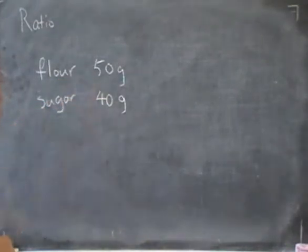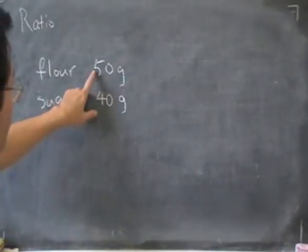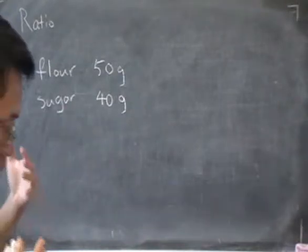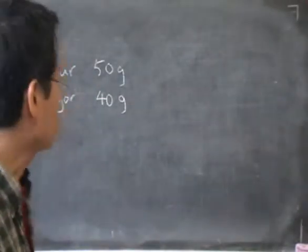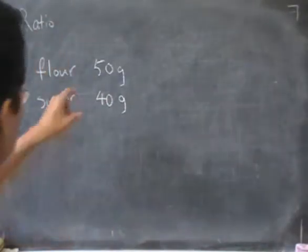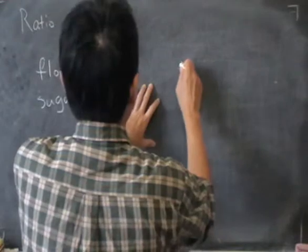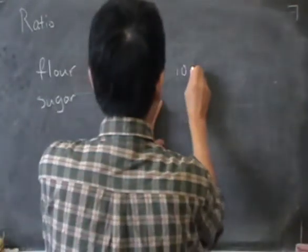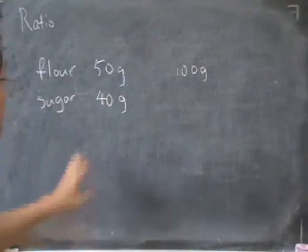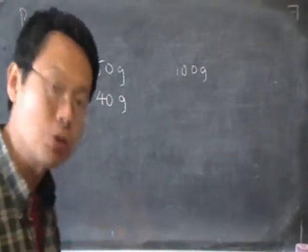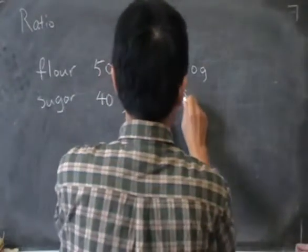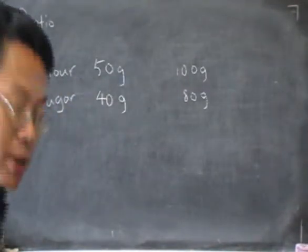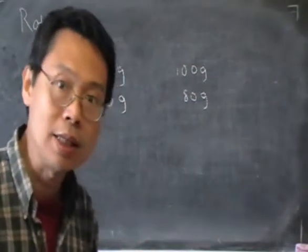If you look at these two amounts — I have 50 grams of flour and 40 grams of sugar — suppose that I want to make a cake that is two times bigger. So instead of 50 grams, I must multiply by two: 100 grams of flour. And I must also multiply the sugar by two, and that's 80 grams. So the idea is that if I increase both by the same amount, I should get a cake that is equally tasty.